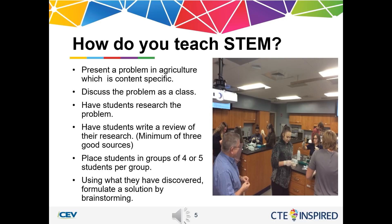We discuss these problems in class and then I have the students research the problems and write a review of the research. I always require that they have a minimum of three good sources. I do not allow my students to use wikis or random Google search results. I always want to make sure they have good science-based or trade-based information. At the beginning of the semester, I place students into groups of four or five and these groups will work together the entire semester.